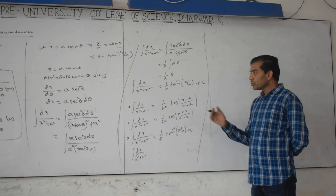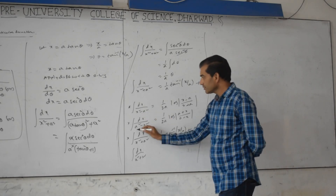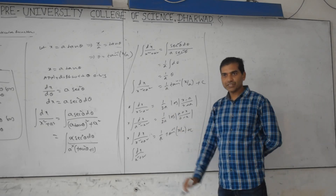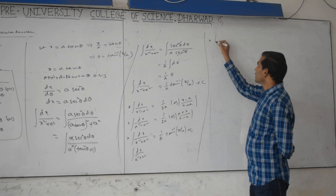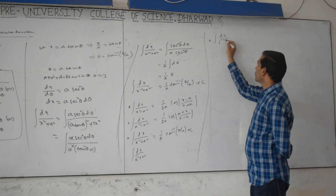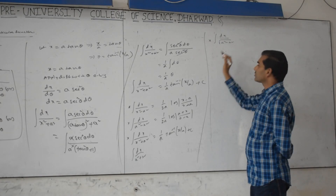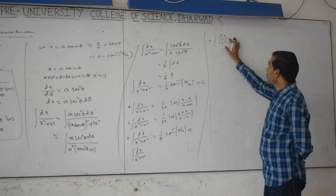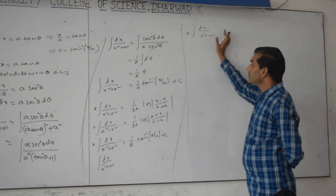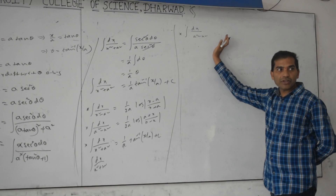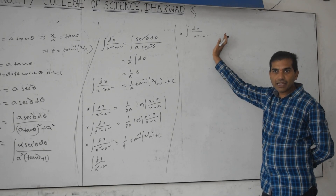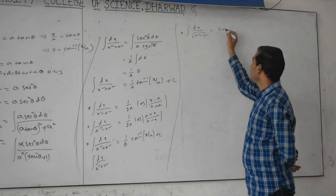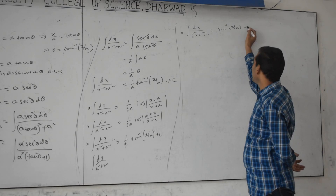These three were without root in the denominator. If root is present: integration of dx by root of (a² minus x²) — without root the answer involves log, but if root is there the answer is sine inverse of x by a plus c.